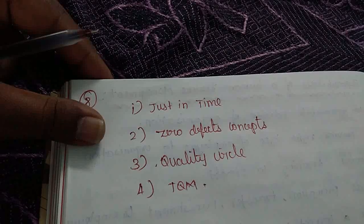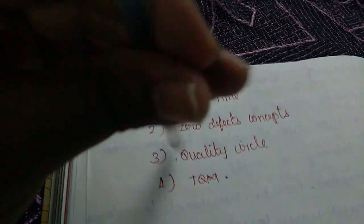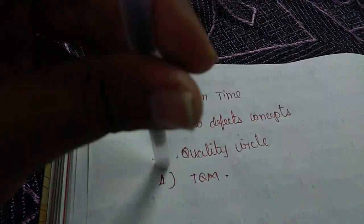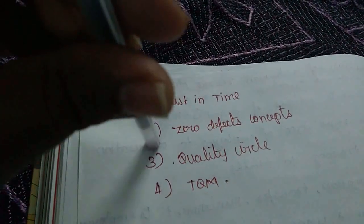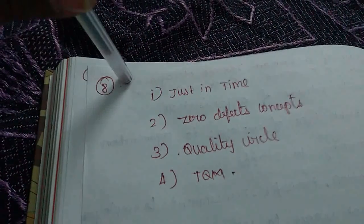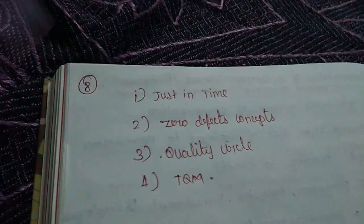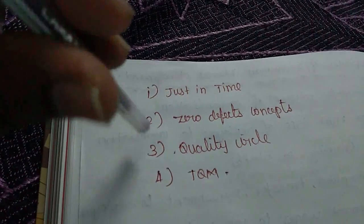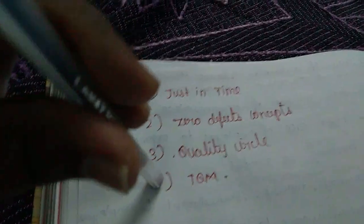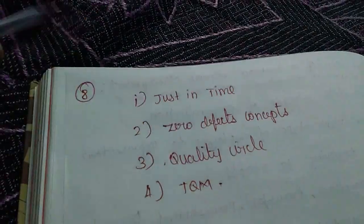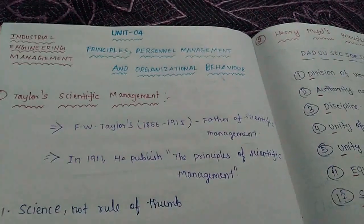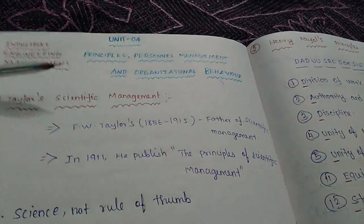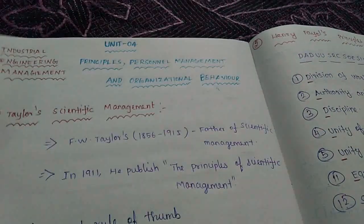For the 10-mark section: Just-in-Time, Zero Defect concept, Quality Circle, and Total Quality Management are important concepts of Unit 4. These will be explained in the next step; 2 marks will be explained as well.